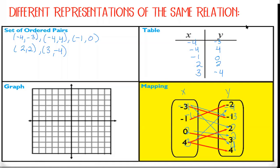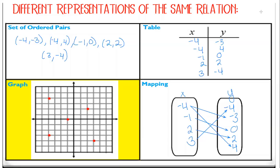All right, so let's look at this. We had a graph and we had to go from graph to ordered pairs, to a table, to a mapping. It's easiest to go from graph to ordered pairs because we just write down where the points are. This point is at negative four, negative three. We have negative four, four. Then negative one, zero. Then two, two. And three, negative four. Those are our ordered pairs.